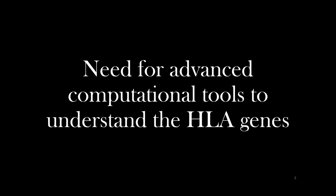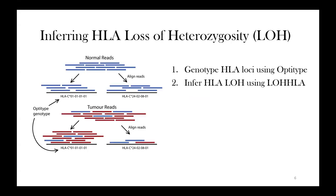All of this together really summarizes the need for advanced computational methods to understand these types of loss. Luckily, I'm not the first here — there have been quite a few studies before me. To identify loss of heterozygosity at these genes, two steps are required: first, genotyping the alleles from a normal sample using a tool called OptiType to build a personalized HLA genome for each patient, and then using a second tool called Lola to align reads from matched normal and tumor samples to compare allele coverage.